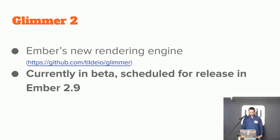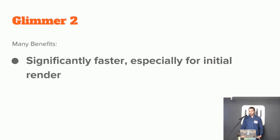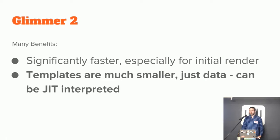Glimmer 2 is Ember's new rendering engine, to be released in about six weeks. It has many benefits. It's significantly faster, especially and crucially for initial render. Glimmer 1 brought great improvements in re-render performance, but initial render was not really improved from pre-Glimmer. Glimmer 2 aims to solve that problem. The templates are much smaller — it's just an array of data, not JavaScript like all the previous templating engines in Ember. Because it's just data, it can be just-in-time interpreted, so not having to process or parse a lot of code is a big win for boot time performance.